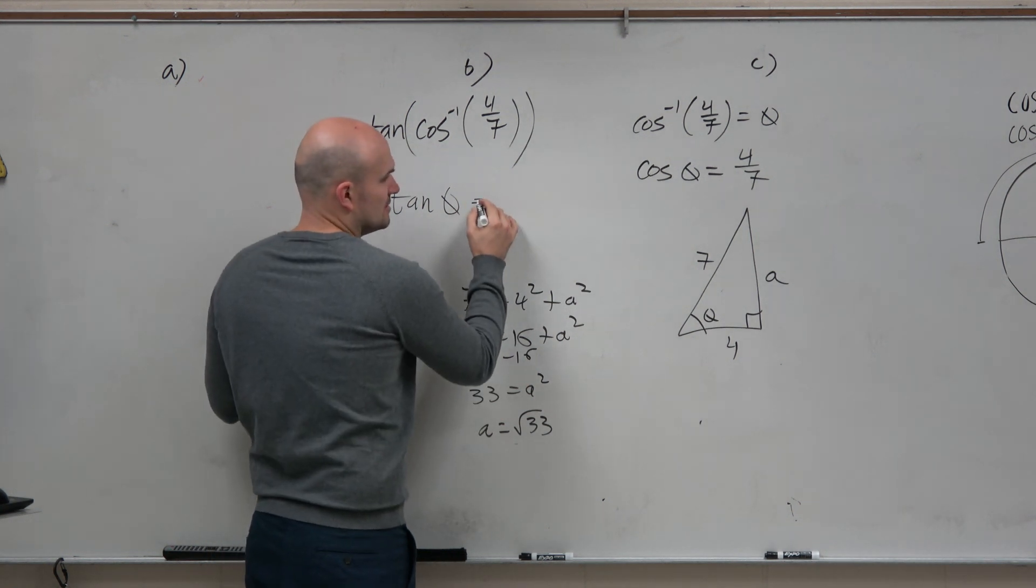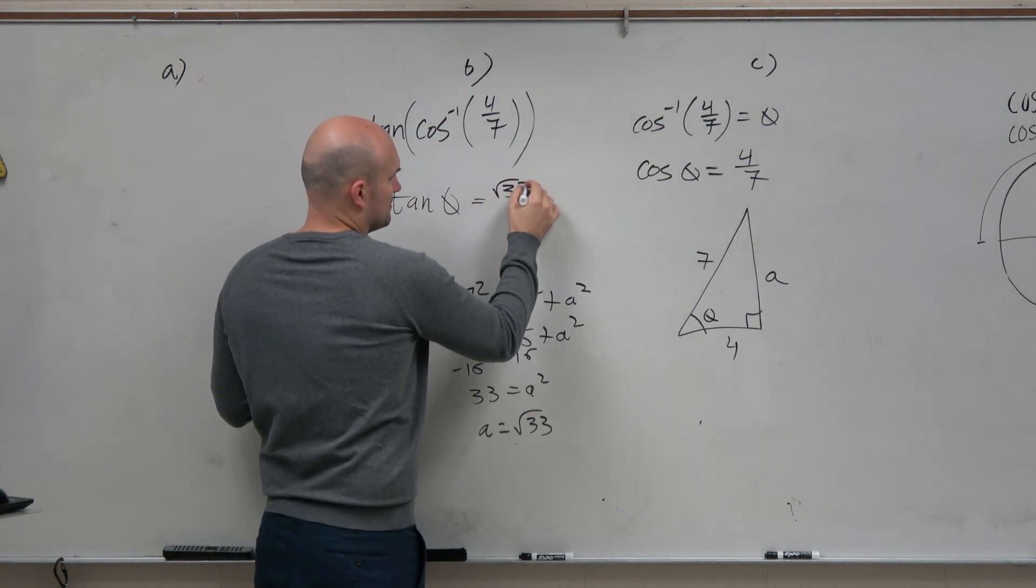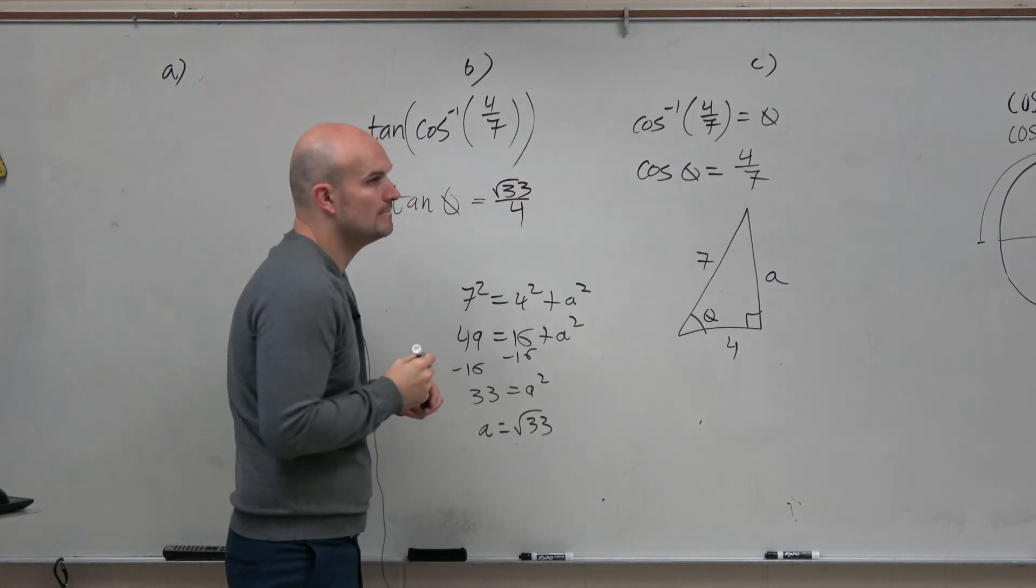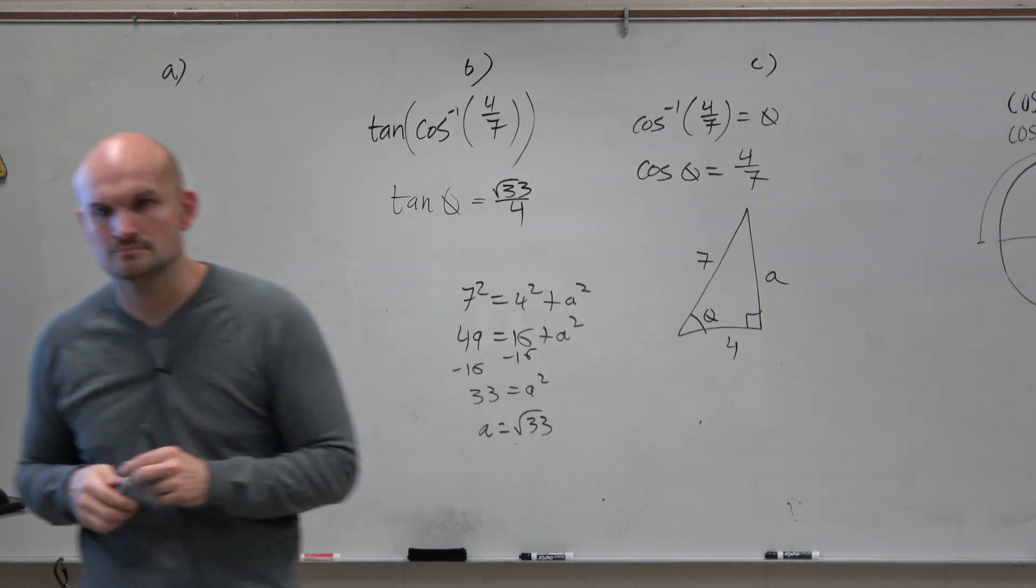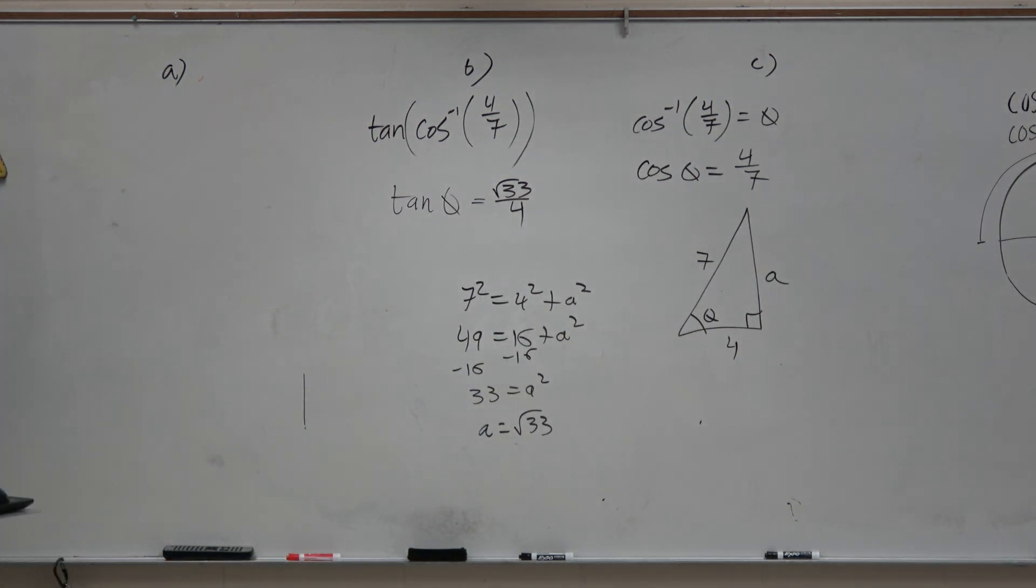So therefore, we're just going to use square root of 33 over 4. There we go, done. So it actually wasn't that bad, was it? No.